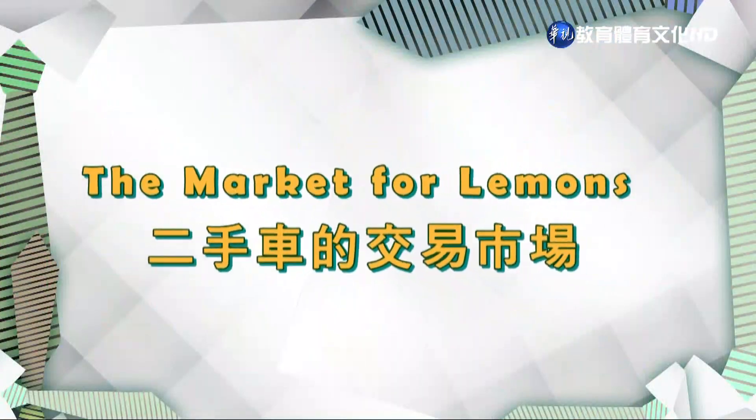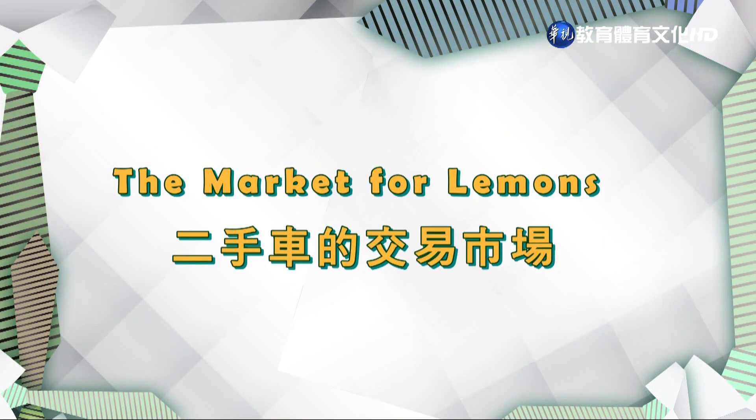消費者不會無限制的搜尋交易對象，我們過去說貨比三家，但不可能貨比三十家、三百家。當資訊收集的成本超過預期獲得的利益，搜尋行為就會停止。這是資訊經濟學的四個假設。接著舉一個非常有名的諾貝爾經濟學家阿克洛夫的例子，他提出了一篇文章，標題叫做《The Market for Lemons》，即二手車的交易市場。